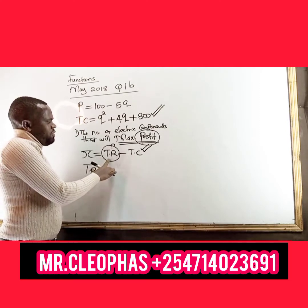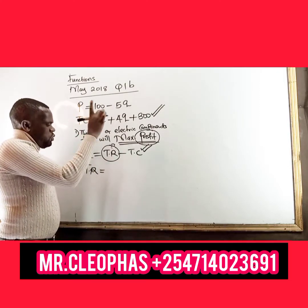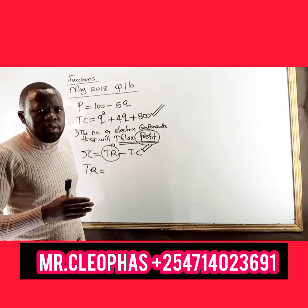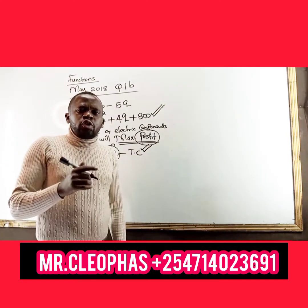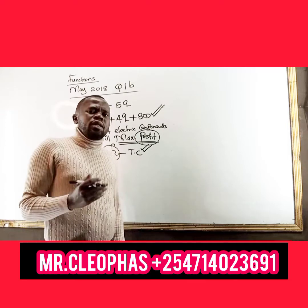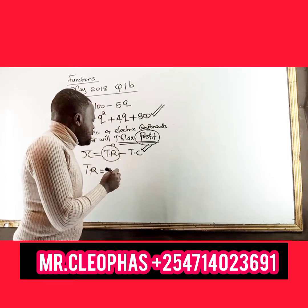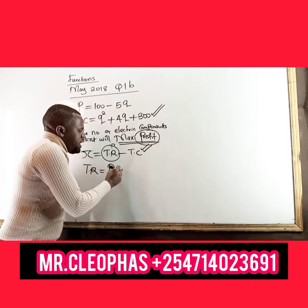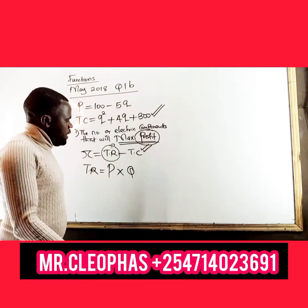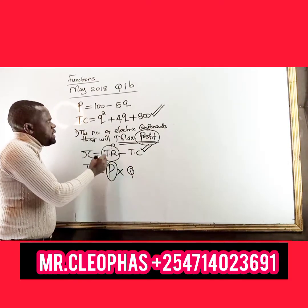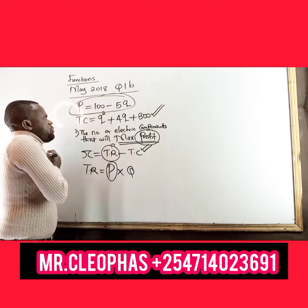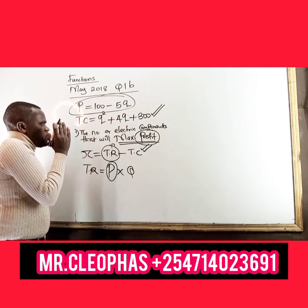From management accounting, economics, and concepts from high school, to get revenue — which is total sales — it is the selling price per unit times the number of units, the quantity. We are given P equals 100 minus 5Q, which is the price function. So instead of writing P, I substitute that equation.